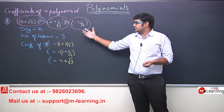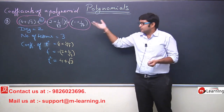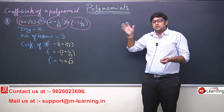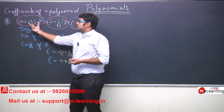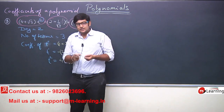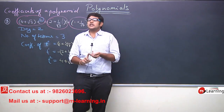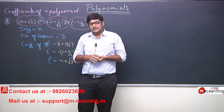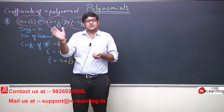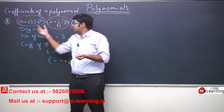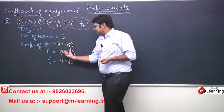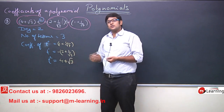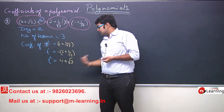इस expression को देख के हमें generally confusion होता है कि this is (4 + √3), this is (2 + 1/√3). Don't get confused because सोचिए, (4 + √3) अपने आप में एक constant है. 4 की value constant है, √3 का value constant है. जब इनको आप add करेंगे, तब भी इनका value constant रहेगा. ऐसा तो नहीं है कि 4 और √3 का value add करने पे expression बदल जाए. So, इसीलिए this whole is a constant term. That's why this is the coefficient. This whole is again a constant term, so यह coefficient है. This is a constant term, so this is a coefficient.